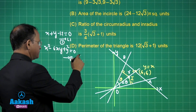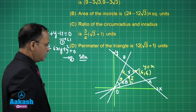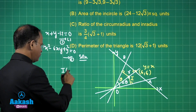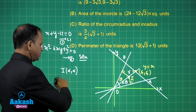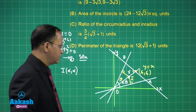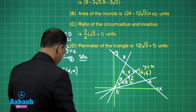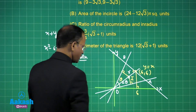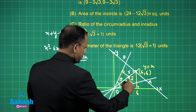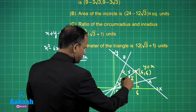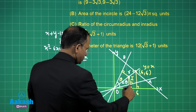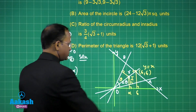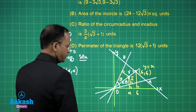Let the incenter I be at (α, α) since it lies on y = x. Taking 6 as the relevant coordinate and dropping a perpendicular, we see that x = α at that foot. So I is at (α, α) and we label the foot of the perpendicular as A'.